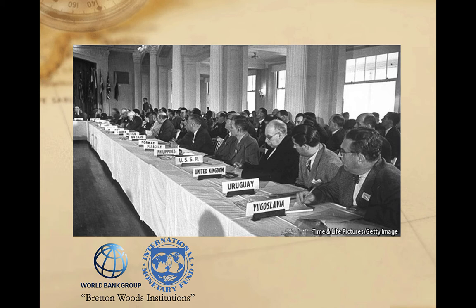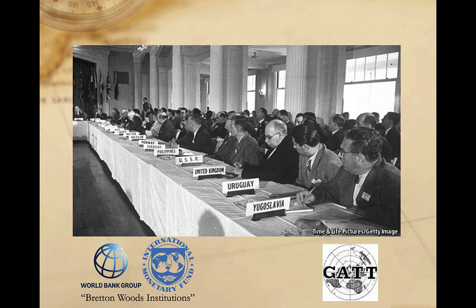But as negotiations on establishing the ITO dragged on, the United States and seven other countries — the United Kingdom, Canada, Australia, France, Belgium, the Netherlands, and Luxembourg — moved forward on another less formal group: the General Agreement on Tariffs and Trade. Negotiations on the ITO continued until 1950, when a final agreement was reached. However, US President Harry Truman announced that he would not submit the ITO treaty to the US Senate for ratification, and the United States would not seek membership. US opposition centered on the possible impact the agreement would have on domestic economic policy. With the withdrawal of the United States, the organization was doomed to fail, and no other states would approve the treaty.